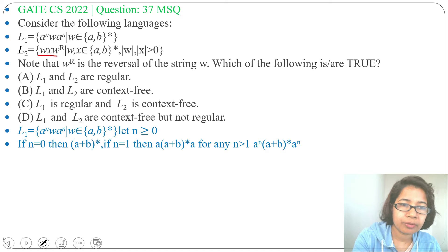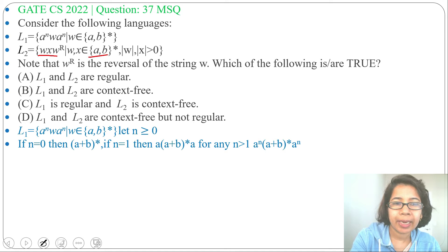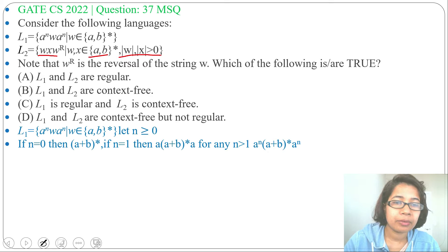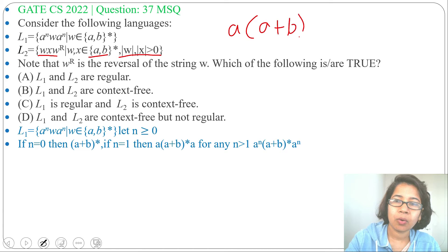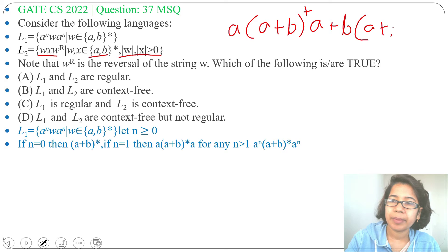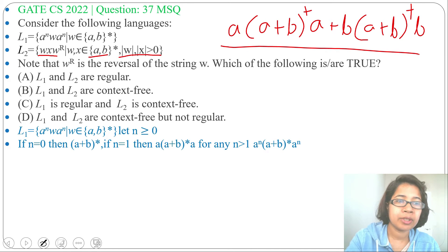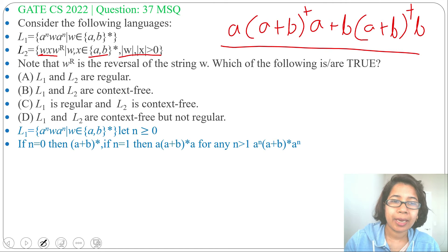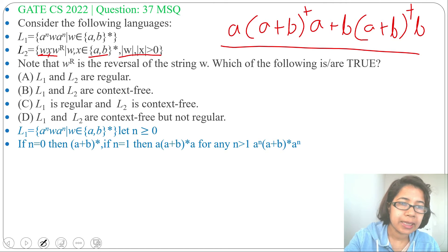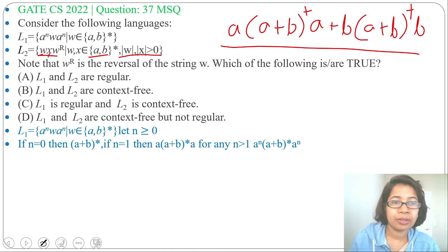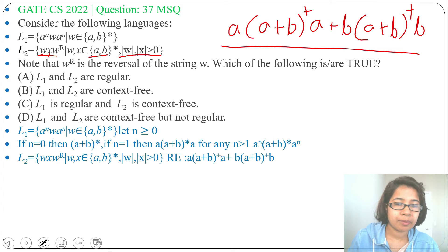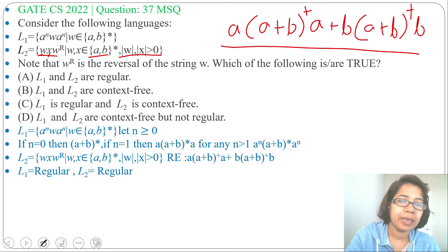Next, L2 = w x w-reverse, where w and x belong to (a+b)+ (positive closure), meaning minimum length equals 1. We can write a regular expression for this: a(a+b)+a | a(a+b)+b... considering w as a single 'a' or single 'b', and (a+b)+ as x. This is a regular expression for w x w-reverse, so L2 is also a regular language.